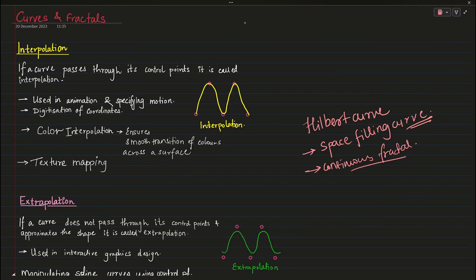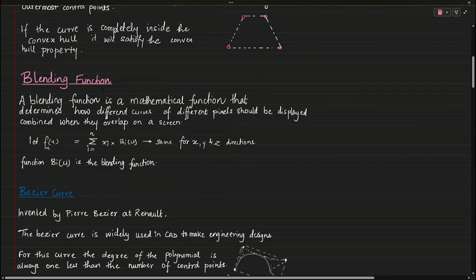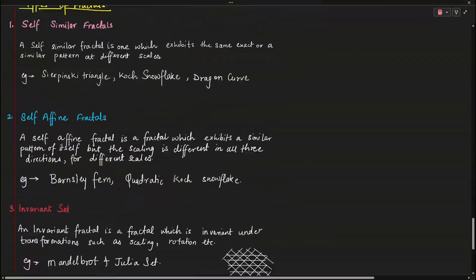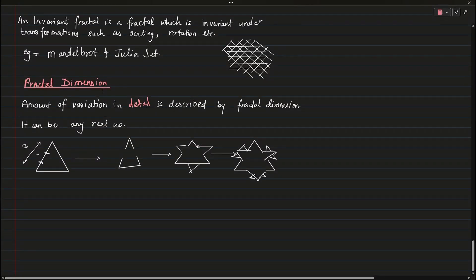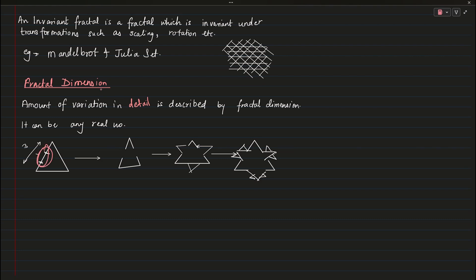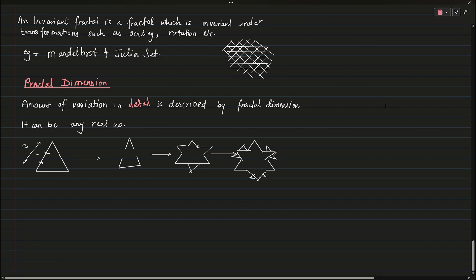One more detail: the Koch curve is a triadic curve, which means that each side of the initial fractal is divided into three parts. Thanks for watching, bye.